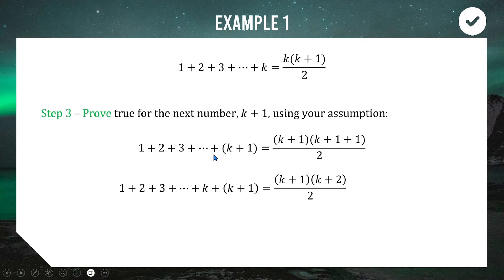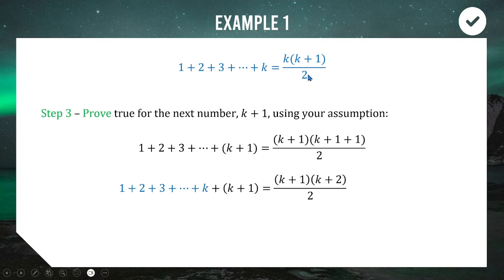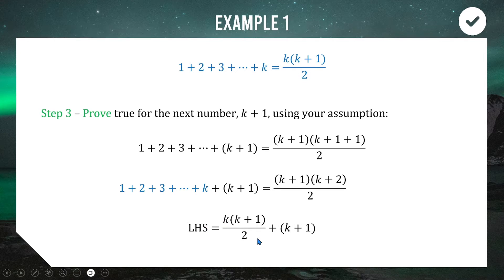It's important to note that because you're adding all the numbers up to k+1, the second-last number before k+1 is k. So 1 plus 2 plus 3, all the way up to k, is equal to our assumption: k times (k+1) divided by 2. We substitute that assumption into the left-hand side, plus the remaining k+1 term. Everything summed up to k equals k(k+1)/2, so we substitute that in.